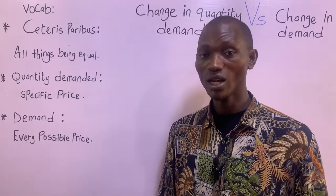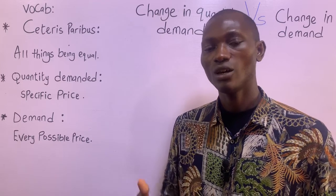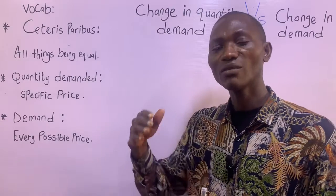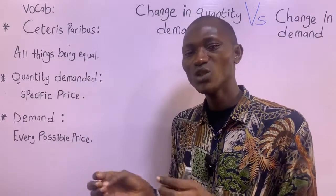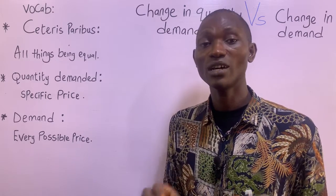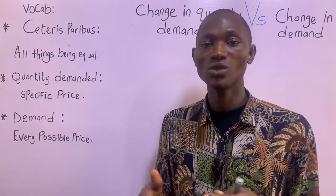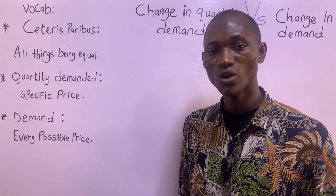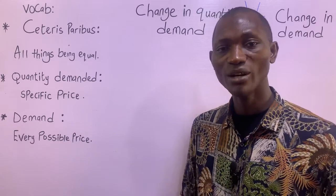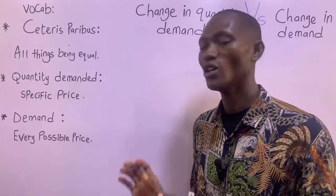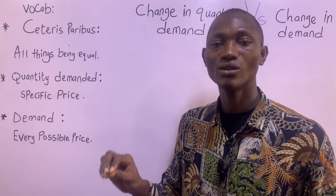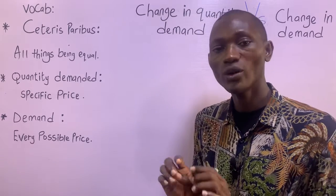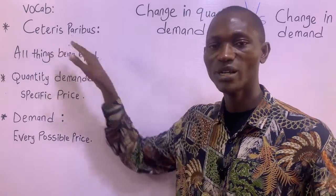All of them will remain constant for there to be: the lower the price, the higher the quantity demanded, or the higher the price, the lower the quantity demanded. Because if any of the other factors are allowed to change, it will distort the normal law of demand — the inverse relationship between price and quantity demanded. So: lower price, higher quantity demanded, Ceteris Paribus; higher price, lower quantity demanded, Ceteris Paribus. No other factor will be allowed to change. That's the assumption of Ceteris Paribus.